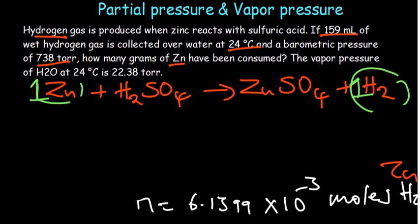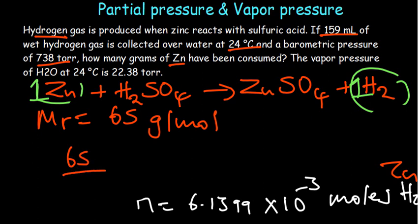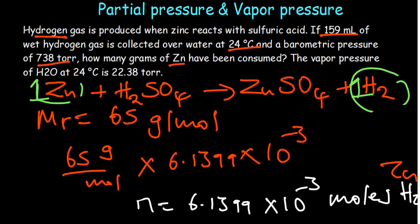Now, if we check our periodic table, our molar mass of zinc is 65 grams per mole. If we have the moles and the molar mass, we're able to find the mass. How do we basically get to do that? We just basically get to multiply. It's 65 grams per mole multiplied by the number of moles. So 6.1399 by 10 to the power negative 3 moles.